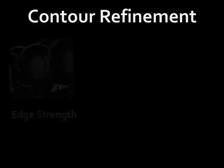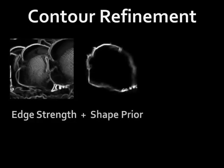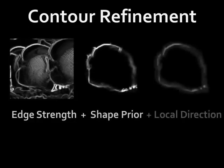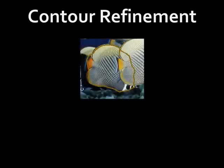We further refine each detected object contour using a snake. Typically, work on active contours only considers local edge strengths, but we also take into account global and local shape matches using the template as a shape prior. The figure shows our refined energy map and active contour results.